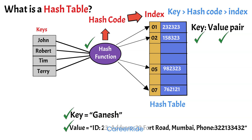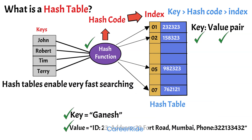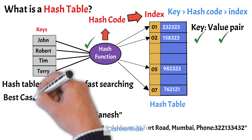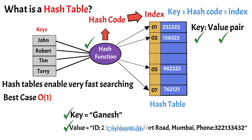Since the size of the hash table is limited and it has to accommodate unlimited hash codes, the hash function maps the hash value to an index into the hash table instead of resizing the hash table. A hash table enables quick searching. Under the best conditions, the average time required to search for an element is O(1), and O(n) in the worst case.